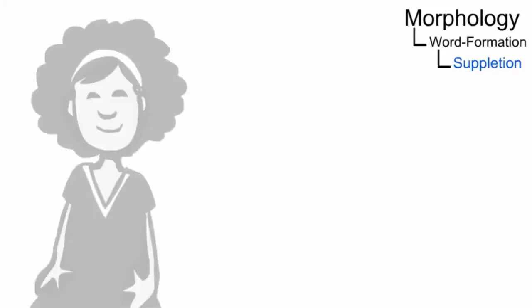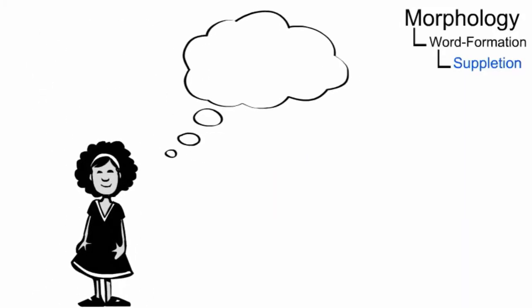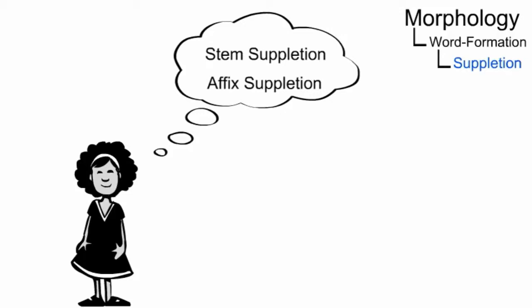Different kinds of suppletion affect different linguistic signs: stem suppletion and affix suppletion.